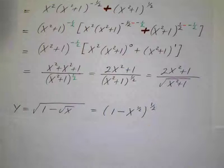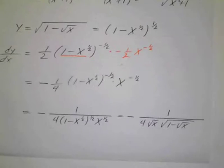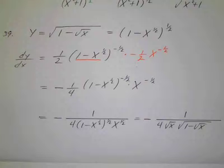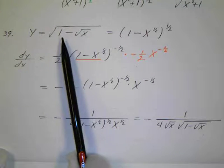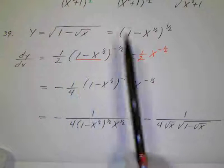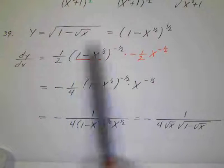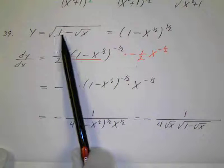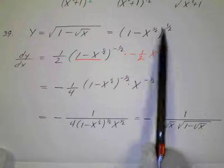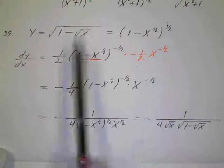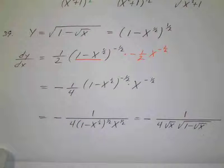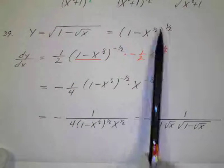And then number 39 — this wasn't quite as dense, so it's a little easier to follow. y equals the square root of 1 minus the square root of x. I wrote this in exponential form: the square root is the 1 half power, and then 1 minus the square root of x is 1 minus x to the 1 half. Again, we're going to have a chain rule.